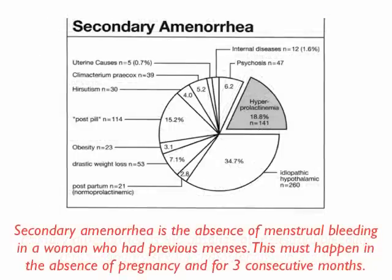Secondary amenorrhea is the absence of menstrual bleeding in a woman who had previous menses. This must happen in the absence of pregnancy and for three consecutive months. The graph shows the distribution of the different causes of secondary amenorrhea.